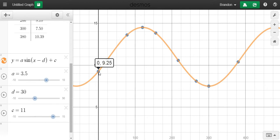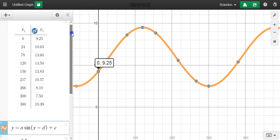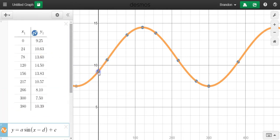So I have a point there. 0, 9.25, 24, 10.63. Let's see how I was doing. 24, 10.63. Okay, it looks like I've got it pretty much right on there now.